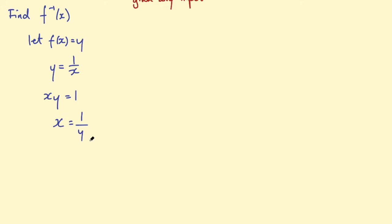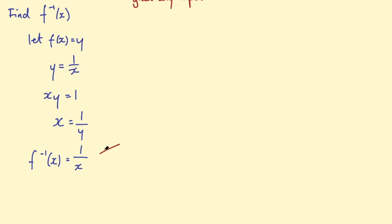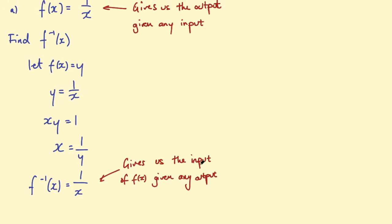Now we change the letters: the output becomes the input — in other words, y becomes x. So we call this f inverse, written f to the minus 1, and it equals 1 over x. This gives us the input of the original function given any output. So you can see it's just the opposite, or the inverse, of the original function.